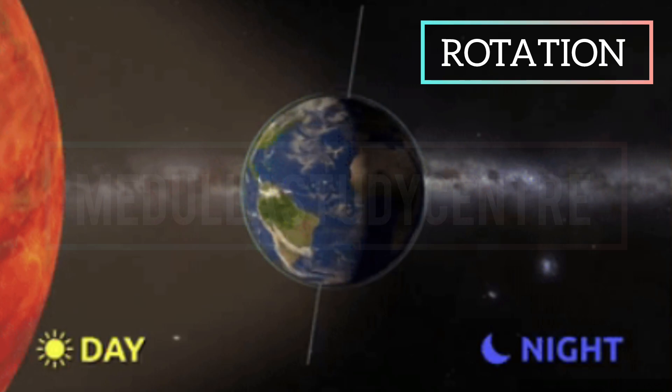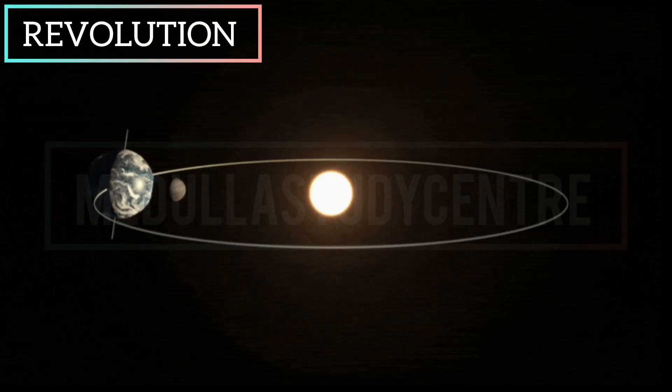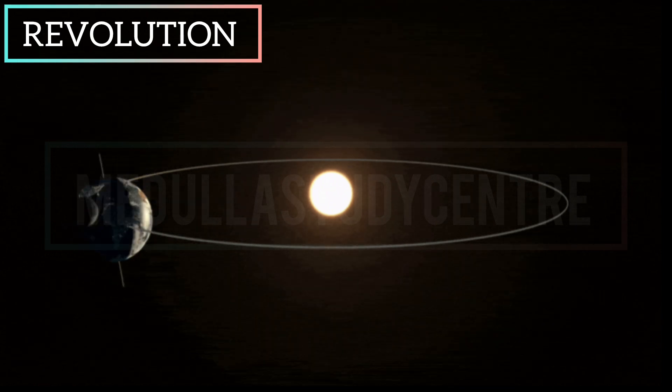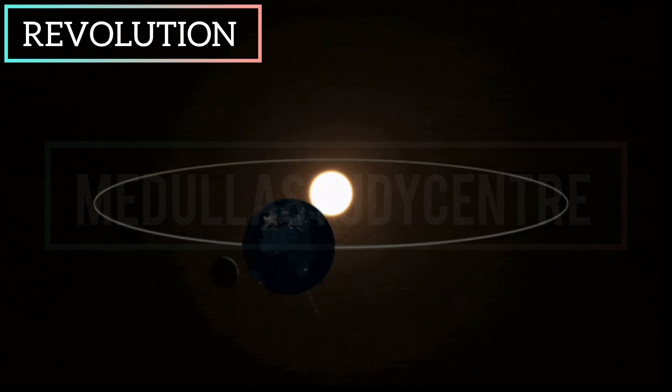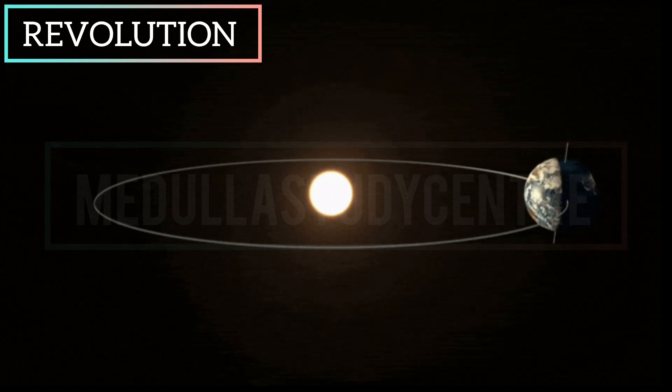It completes one rotation in 24 hours. What is revolution? When the Earth revolves around the Sun is called revolution. It revolves in a fixed path called an orbit.